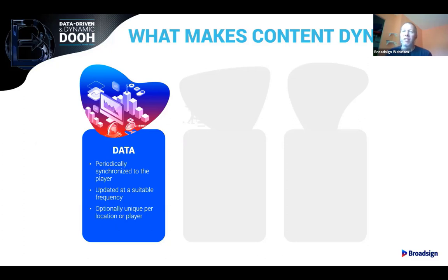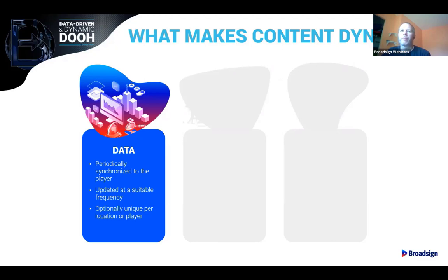Data can come from either a centralized server — something on the internet where all of the players connect to it to get their information — but it could also be a local sensor. Companies like Quividi and AdMobilize that do audience recognition, with male/female gender counts, can also feed into dynamic content through various APIs on the player. So dynamic content can get data from either a centralized server or a local set of sensors.